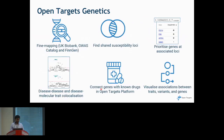To summarize the OpenTargets Genetics portal: we generate fine-mapping data from UK Biobank, the GWAS Catalog, and the FinnGen portal. We find shared susceptibility loci, prioritize genes at associated loci, and create disease-disease and disease-molecular trait data. All this data is then fed back into the OpenTargets platform to connect genes with known drugs, and users can also visualize associations between traits, variants, and genes.